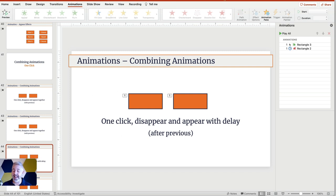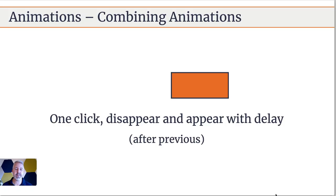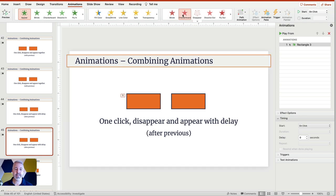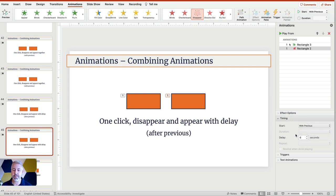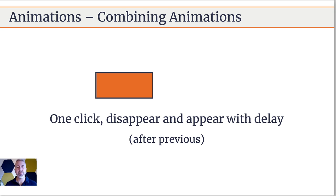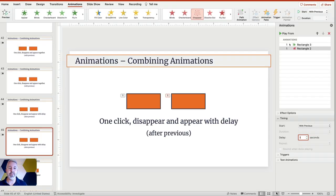Now we can do this with a delay. You'll see the delay option here — there's about a half-second delay in the example. What's happening is we set one shape to appear, set the next to disappear using with previous, and then apply a delay — for instance, one second. So the animation appears, then one second later it disappears. It's a simple idea, but these are foundational things you'll find lots of opportunities to use once you know they're possible.